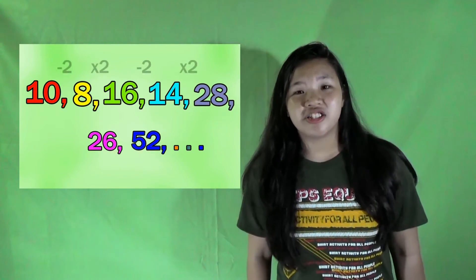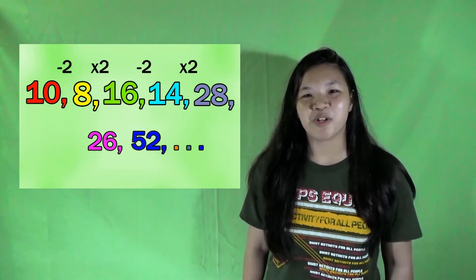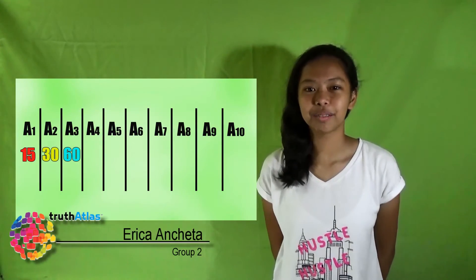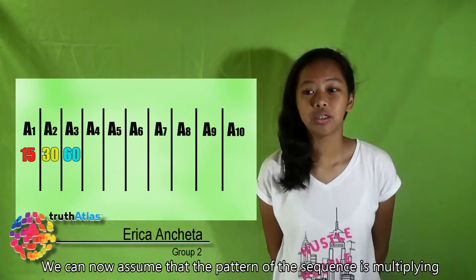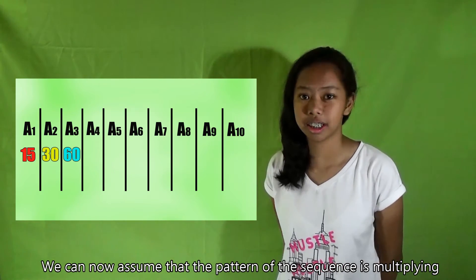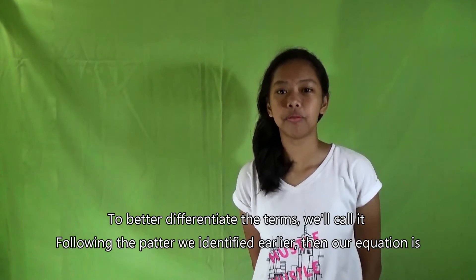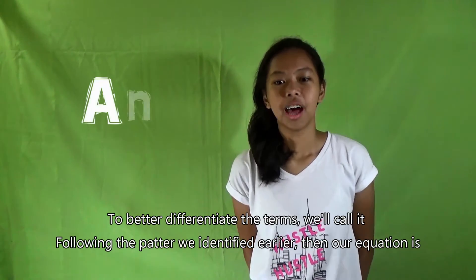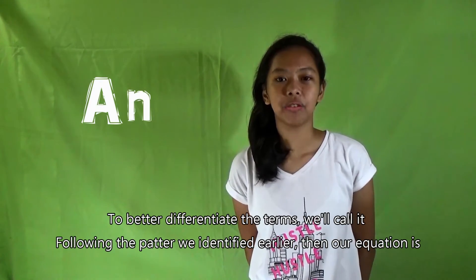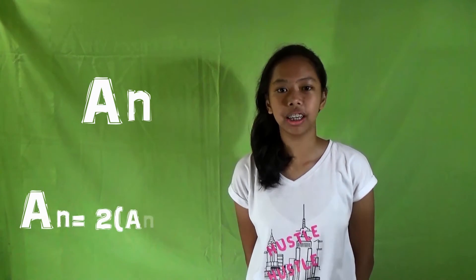But the pattern is just alternatingly subtracting 2 and multiplying by 2 to get the next number. Let's now get back to the problem. We can now assume that the pattern of the sequence is multiplying the quantity by 2. To better differentiate the terms, we'll call it a sub n. Following the pattern we identified earlier, our equation is a sub n equals 2 times the quantity of a sub n minus 1.